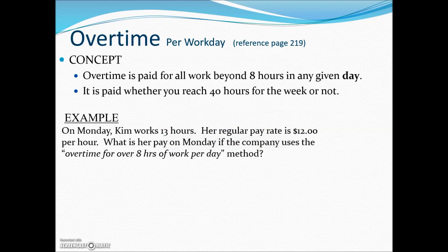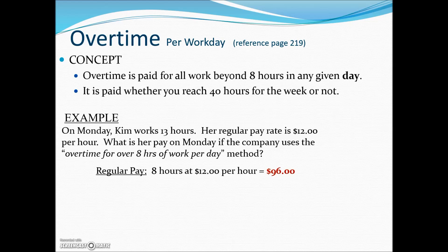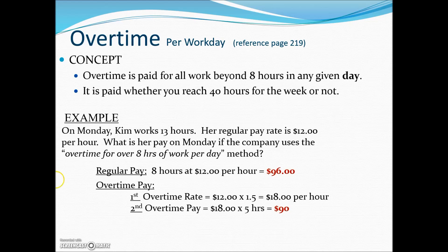Let's take a look at an example. On Monday, Kim works 13 hours. Her regular pay rate is $12.00 per hour. What is her pay on Monday if the company uses overtime for over 8 hours of work per day? Of the 13 hours, 8 hours is a standard day, so 8 hours at her regular pay gives her $96.00. The difference between the 8-hour regular day and 13 hours leaves us with 5 hours of overtime, which we multiply by the overtime rate. She normally makes $12.00 times 1.5, so her overtime rate is $18.00 per hour, times the 5 hours beyond 8, giving her an additional $90.00 earned.